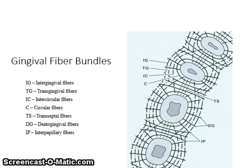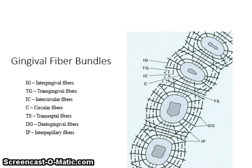Intergingival fibers extend in a mesiodistal direction along the entire dental arch and around the last molars in the arch. These fiber bundles link adjacent teeth into a dental arch unit. Intercircular fibers encircle several teeth and link adjacent teeth into a dental arch unit. Interpapillary fibers are located in the papilla coronal to the transeptal fiber bundles. These fiber groups connect the oral and vestibular interdental papillae of posterior teeth. Transgingival fibers extend from the cementum near the CEJ and run horizontally between adjacent teeth. These fiber bundles link adjacent teeth into a dental arch unit.